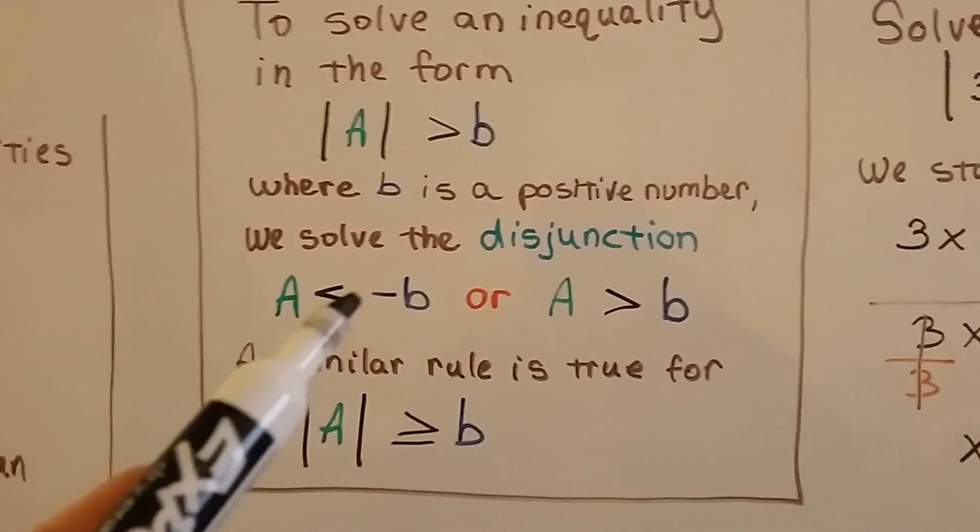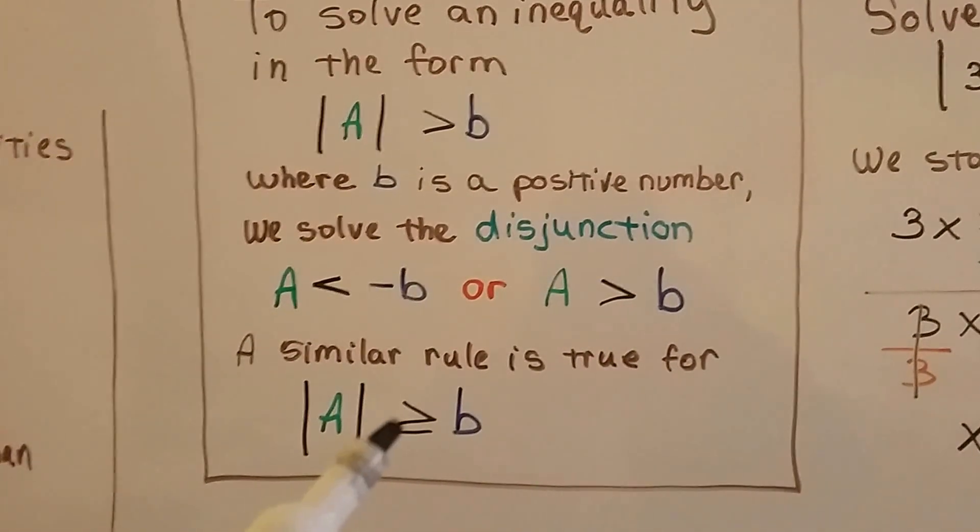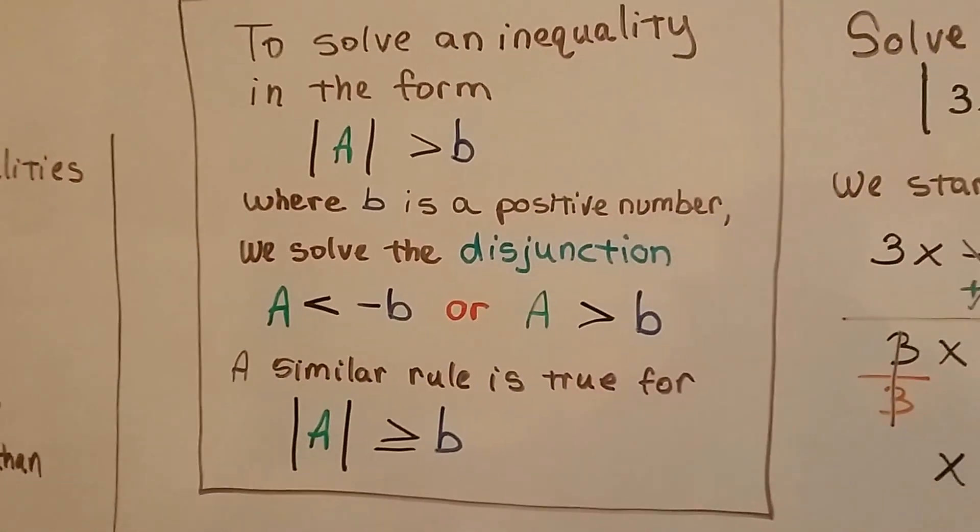a is less than negative b, or a is greater than positive b. And the similar rule is true for a greater than or equal to when we've got absolute value and an inequality.